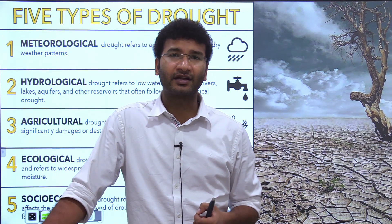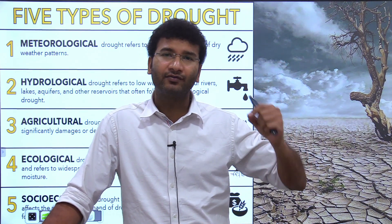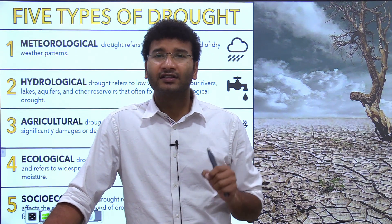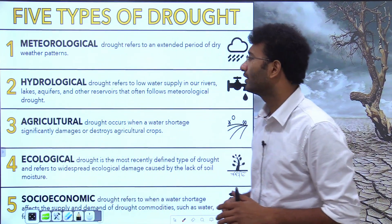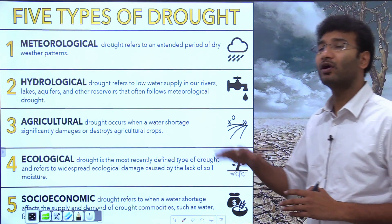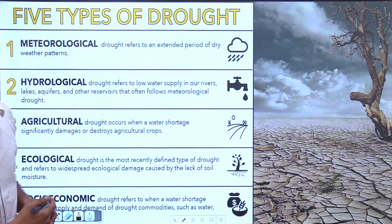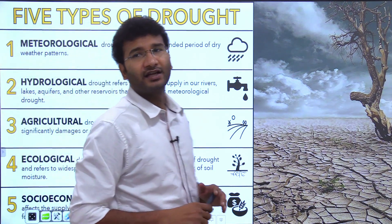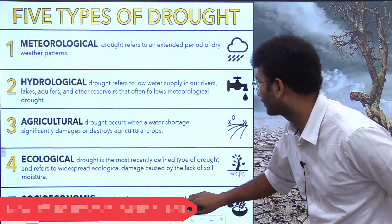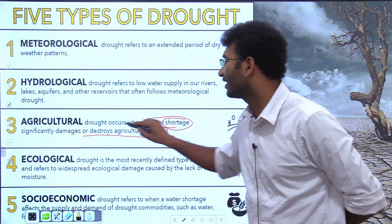Meteorological drought is where the annual rainfall is less than normal. Hydrological drought is when water levels in lakes, rivers, and aquifers come down. Agricultural drought is associated with shortage of water that damages and destroys agricultural crops — this can be for any reason.